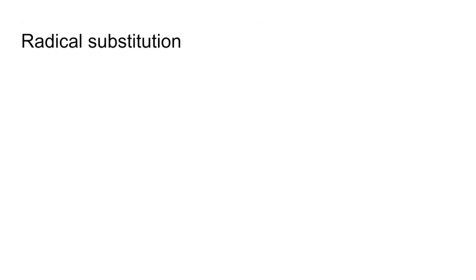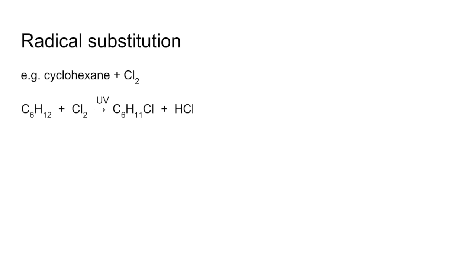We'll start with radical substitution, and the example is cyclohexane plus chlorine. There's the overall equation — that's classed as monosubstitution because one hydrogen from the cyclohexane has been substituted with one chlorine. The reaction is carried out under UV light. The mechanism operates via three steps, and the first is the initiation step, where the UV light splits the covalent bond between the two chlorine atoms into two free radicals. The dot represents the unpaired electron.